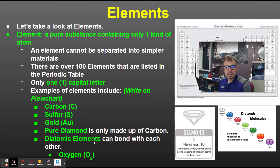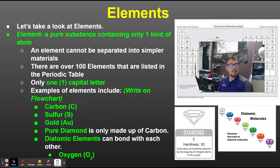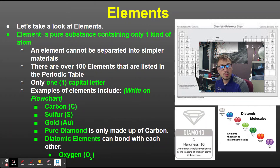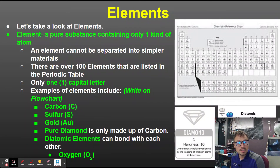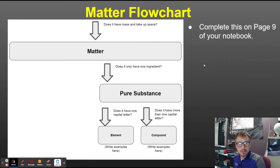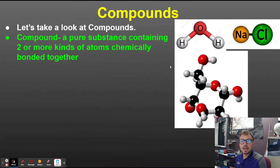Diatomic elements are another example. Oxygen, for instance, has two oxygen atoms bonded together, but there is still only one capital letter. There are only seven elements that can bond with themselves like this. So if you see that, remember: only one capital letter means it is an element.